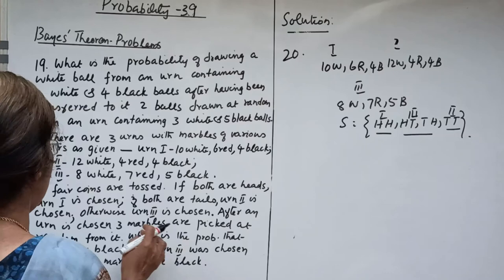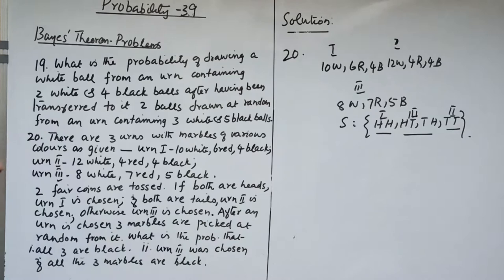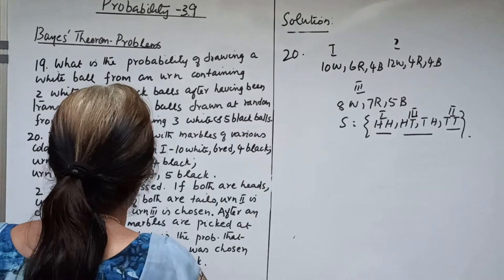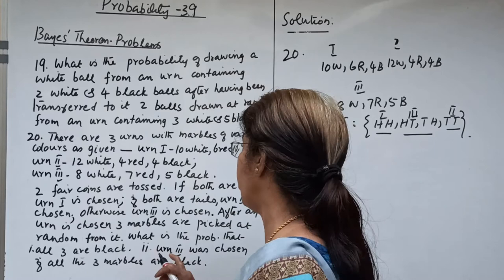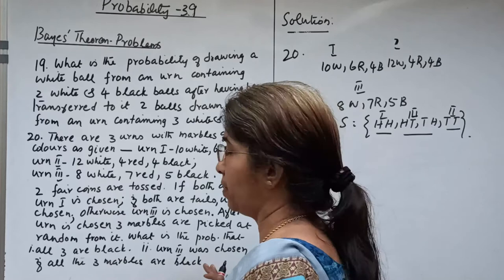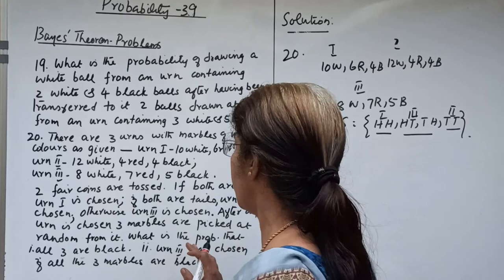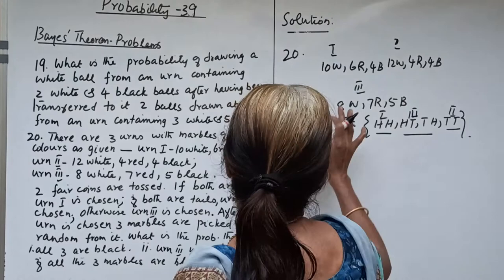Let B be the event that 3 black marbles are drawn. We require to find P(B), the total probability, and P(A3 given B) — that is, under the condition that all 3 marbles are black, what is the probability that urn 3 was chosen? P(B) is obtained using the total probability rule, and the conditional probability P(A3 given B) by Bayes' theorem.